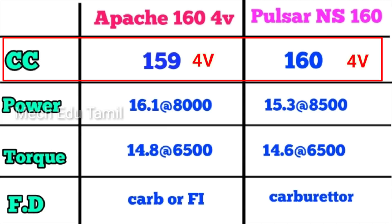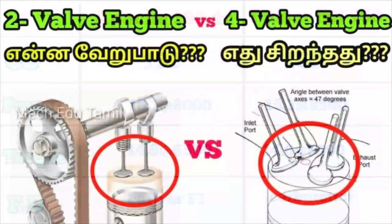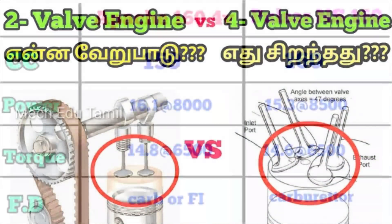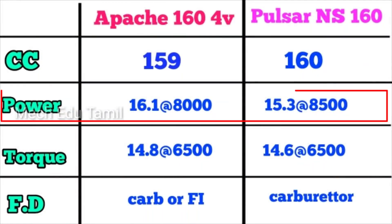The Apache has a 4-valve engine while the NS160 has a 2-valve engine. For maximum power, the Apache RTR 164V produces 16.1 BHP at 8000 RPM, and the NS160 produces 15.3 BHP at 8500 RPM.